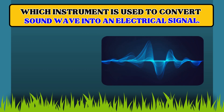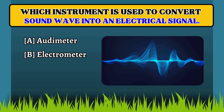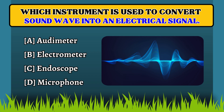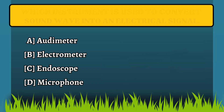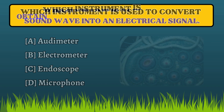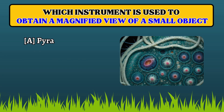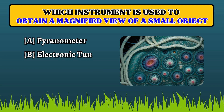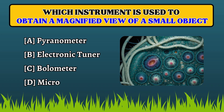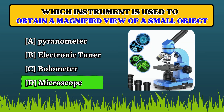Which instrument is used to convert sound waves into an electrical signal? Microphone. Which instrument is used to obtain a magnified view of a small object? Microscope.